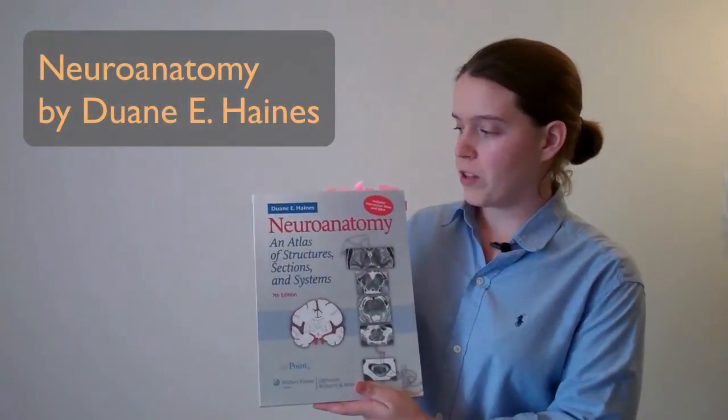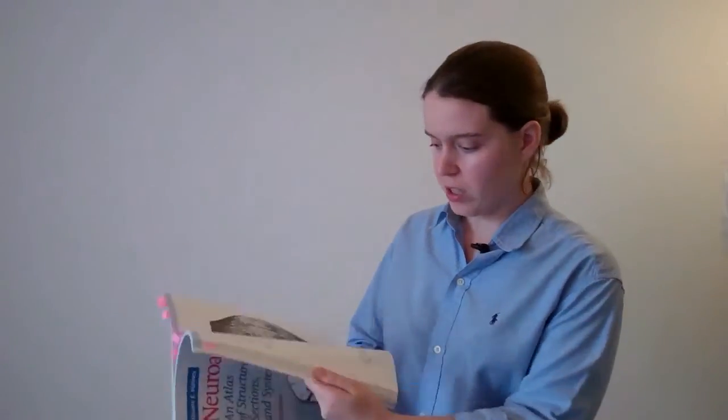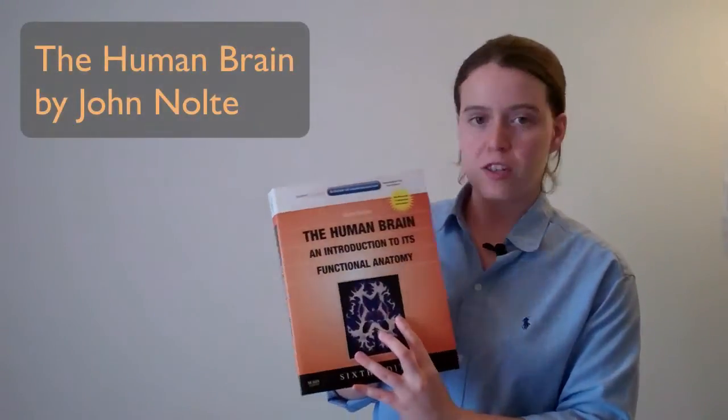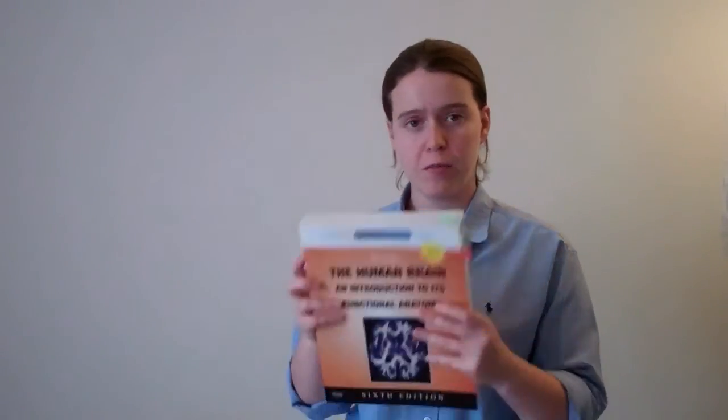I will be using two textbooks that I really recommend because they have great pictures and great explanations. One of them is called Neuroanatomy by Duan Haynes — it has really great MRI pictures and diagrams. The other one is The Human Brain by John Nolte, which also has really incredible pictures, information, and diagrams.